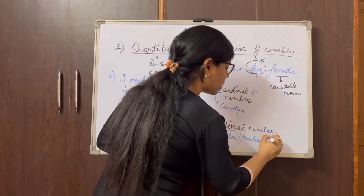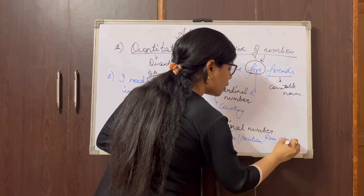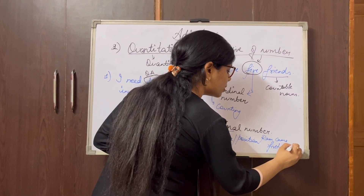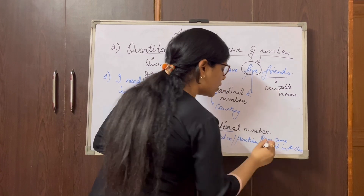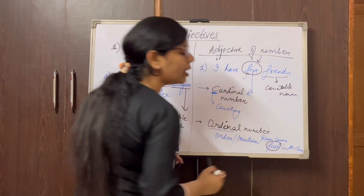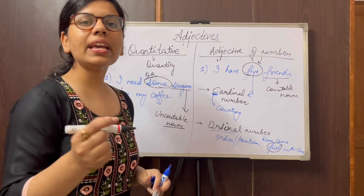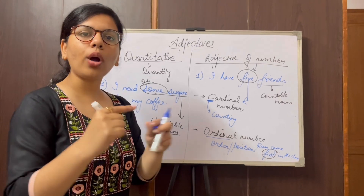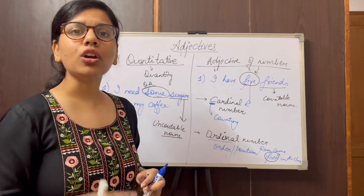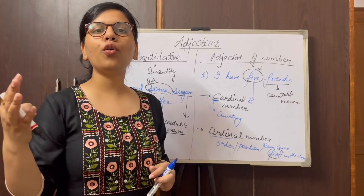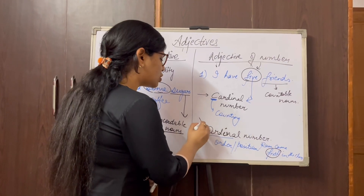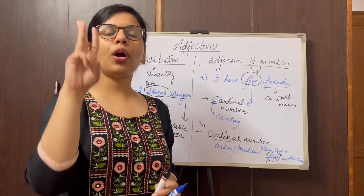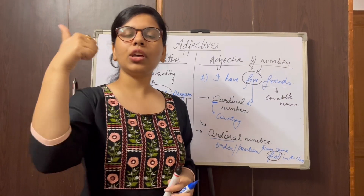Ordinal number means order or position. For example, Ram came first in the class — 'first' is an example of ordinal number. Or: he is sitting at the second bench — what is the order, what is the position? Second. So first, second, third, fourth, fifth, etc. are all examples of ordinal numbers.